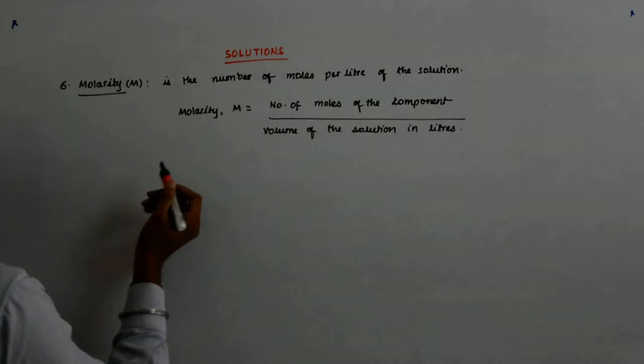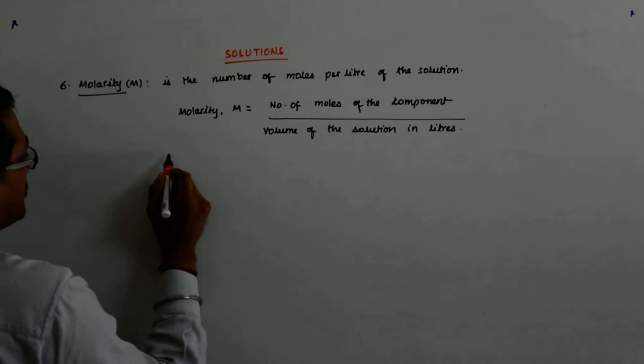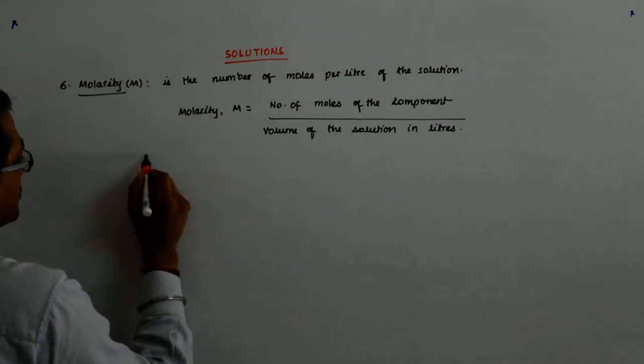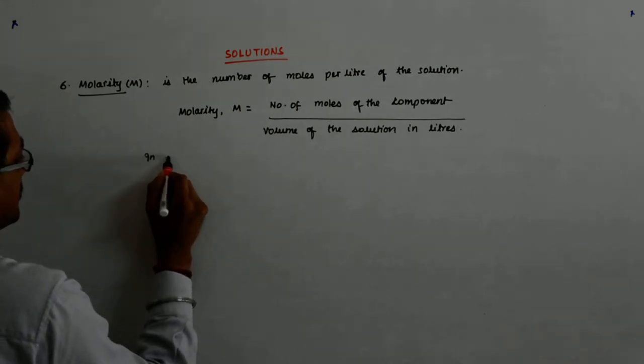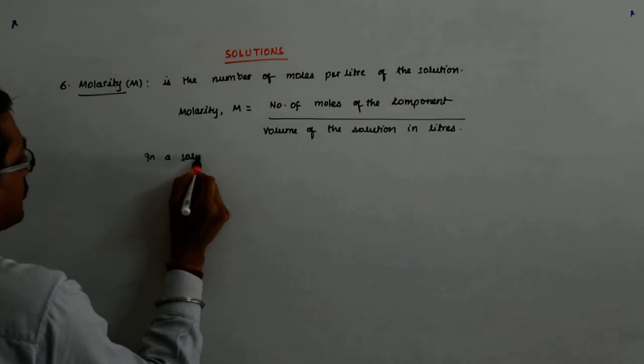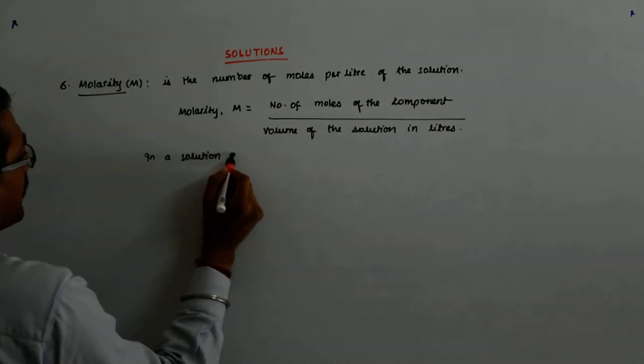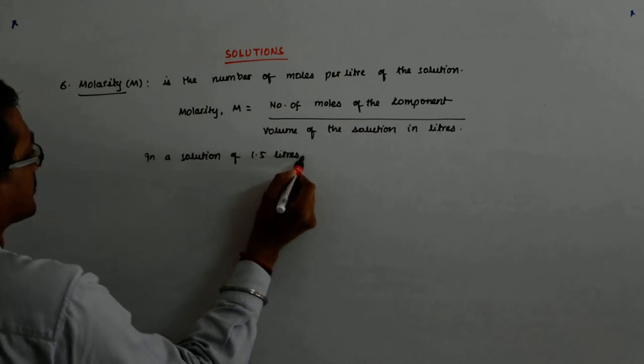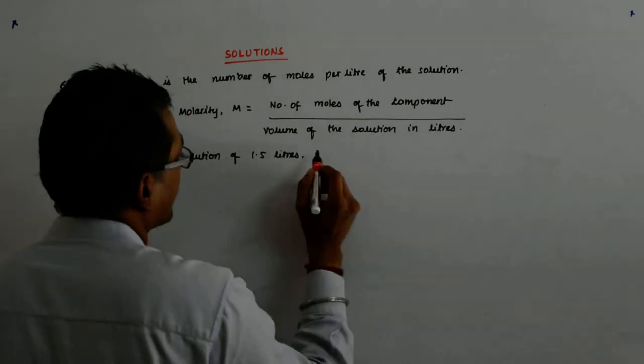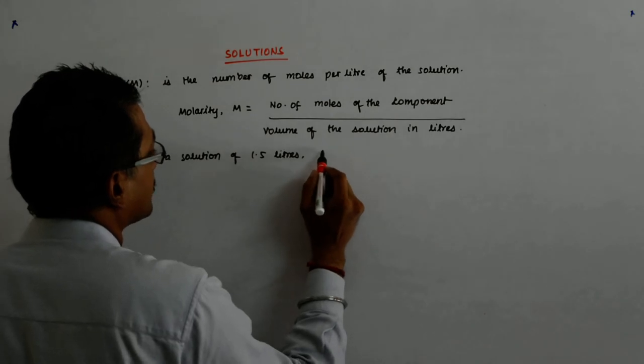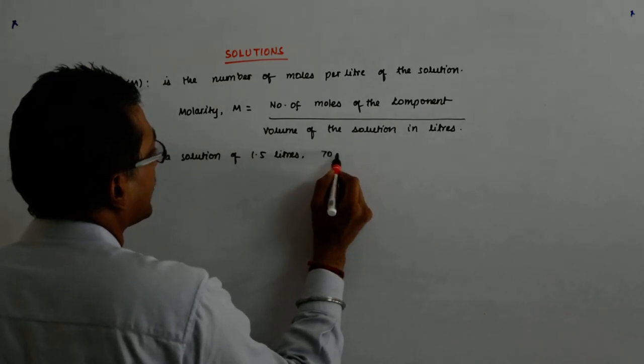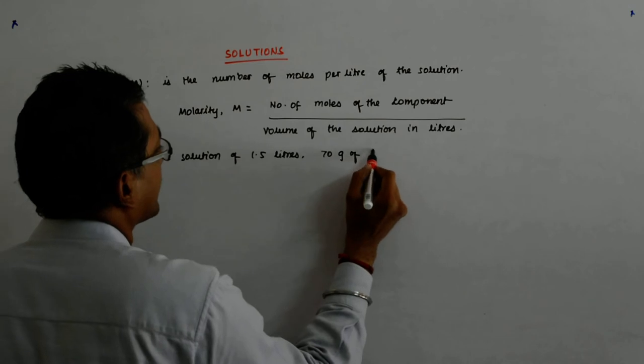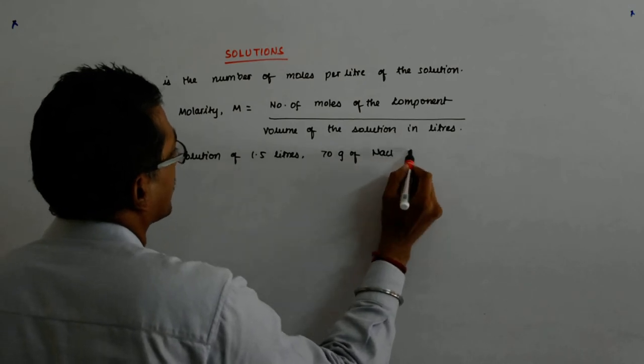So suppose someone says, in a solution of 1.5 liters, 70 grams of NaCl is present.